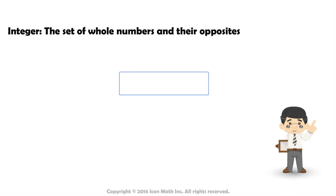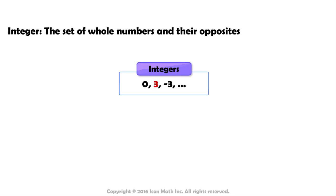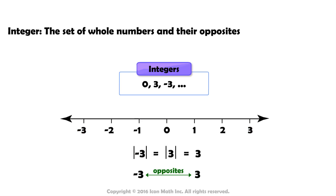For example, 0, 3, and negative 3 are all integers. Both 3 and negative 3 are three spaces away from 0 on a number line, meaning they have the same absolute value and are opposites.